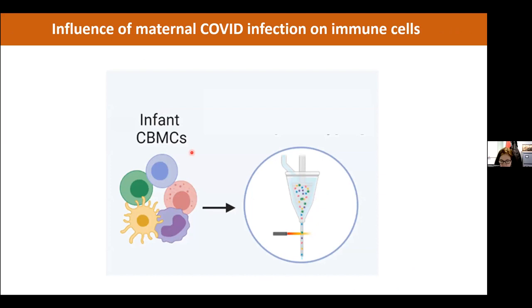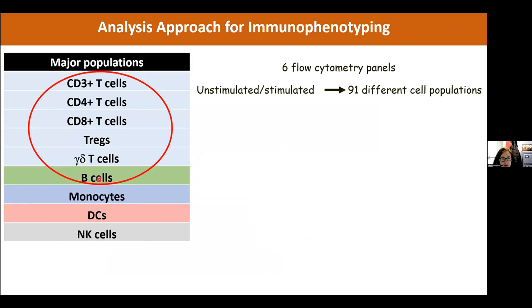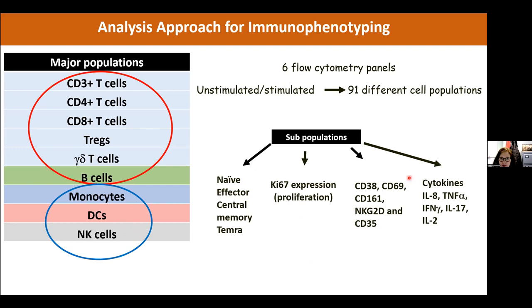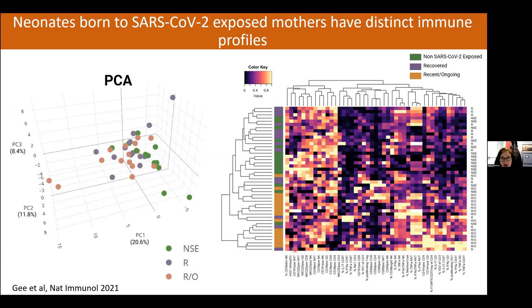To examine whether infant cells were affected by maternal COVID, we used flow cytometry panels covering adaptive T cells and B cells, and innate monocytes, dendritic cells, and NK cells. We looked at memory cells, proliferating cells, activation markers, and cytokine-producing cells to build an immune profile for each infant. In principal component analysis, each dot represents an infant cord blood immune profile — green dots for unexposed infants, and peach/purple for infants born to mothers with COVID — and the groups do appear to segregate.